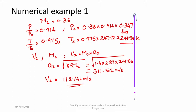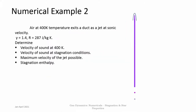The second numerical example: air at 400 K exits a duct as a jet at sonic velocity, meaning Mach number at exit equals 1, with gamma = 1.4 and R = 287 J/(kg·K). Determine the velocity of sound at 400 K, the velocity of sound at stagnation conditions, the maximum velocity of the jet possible, and the stagnation enthalpy.